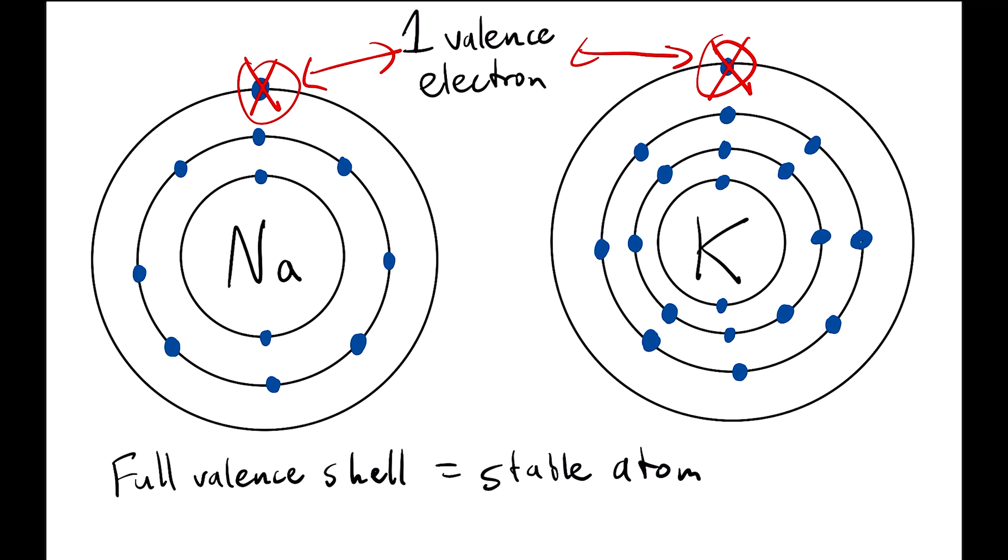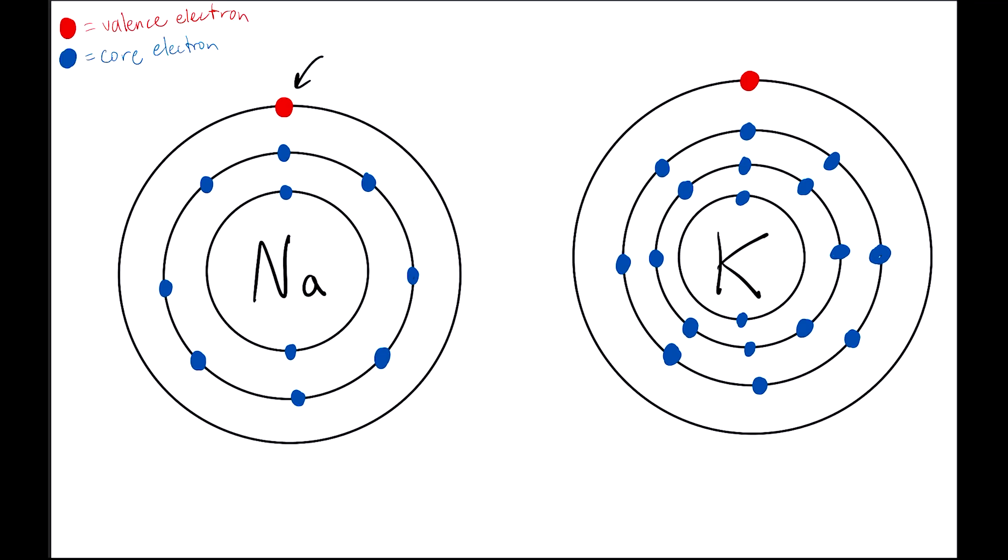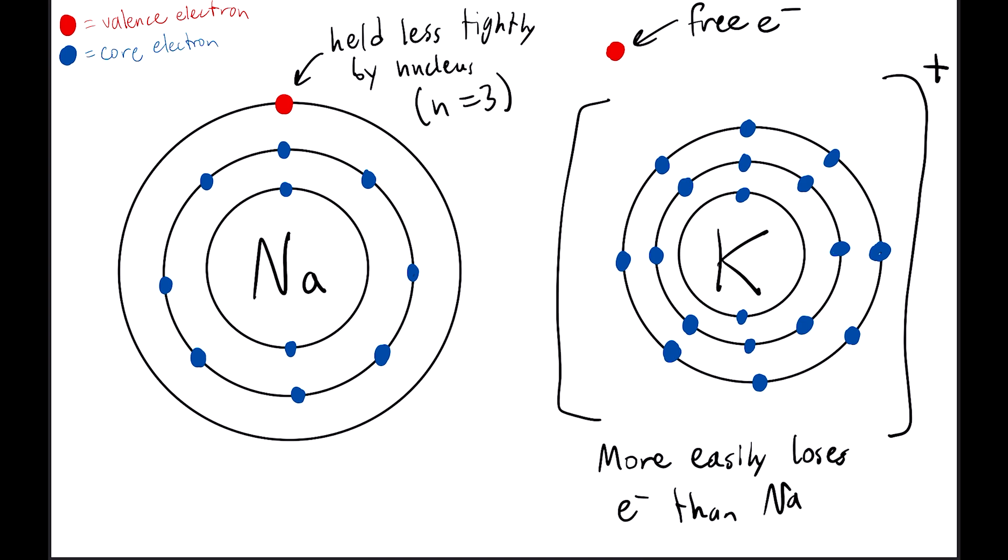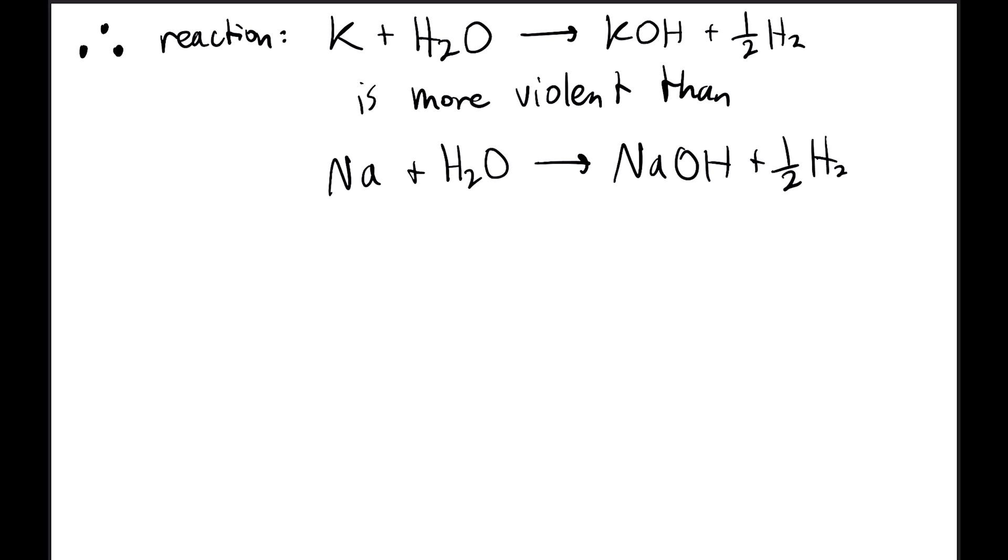The difference between these two elements is that sodium's valence electron is in the third shell, while potassium's is in the fourth shell. The higher the number of the shell, denoted by n, the higher the energy level of that electron. So what happens if potassium's valence electron is held less tightly by the nucleus? Or in other words, it exists at a higher energy level? Well, that means that potassium can more easily lose its valence electron and thus more easily react with water, meaning that the reaction is both faster and releases more energy and is therefore more violent.